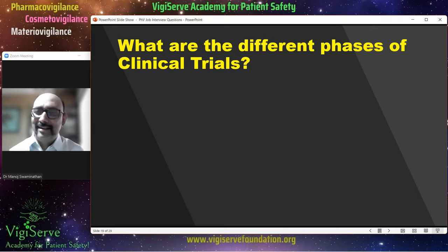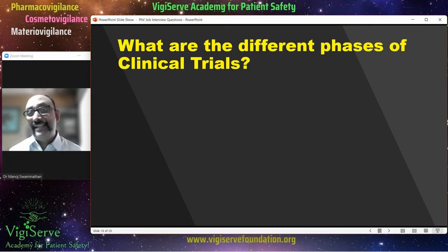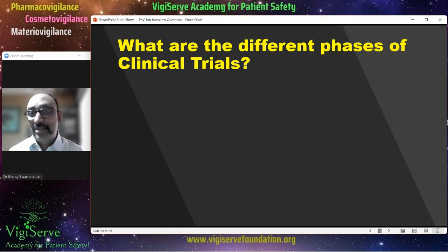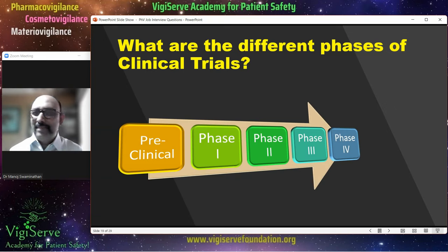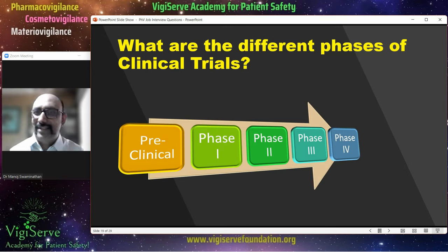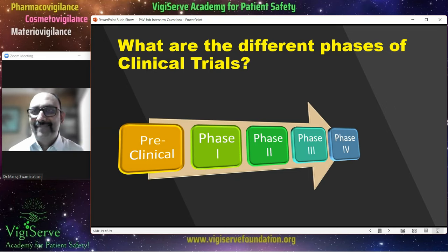What are the different phases of clinical trials? These are not always asked during pharmacovigilance interviews, but may be context-specific where somebody wants to understand whether you know anything beyond pharmacovigilance. You need to talk about preclinical phases, Phase 1, Phase 2, Phase 3, and Phase 4. It is possible that somebody would ask you the other name for Phase 4 clinical trials, where you can talk about post-marketing surveillance.